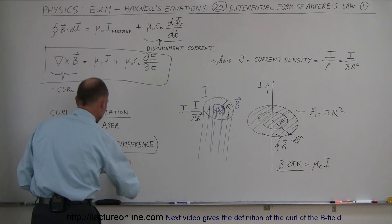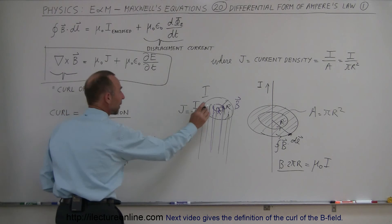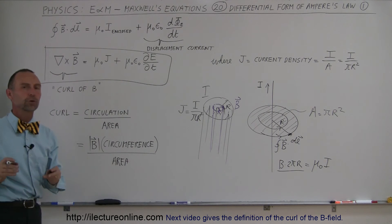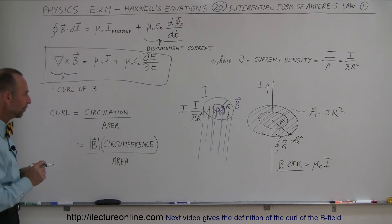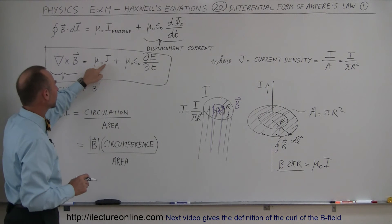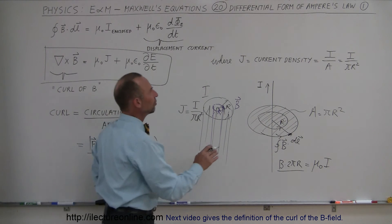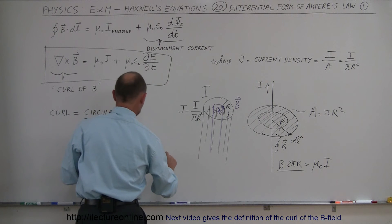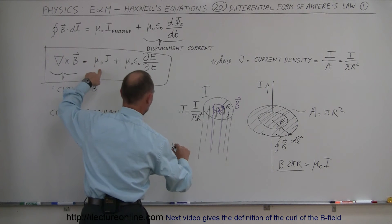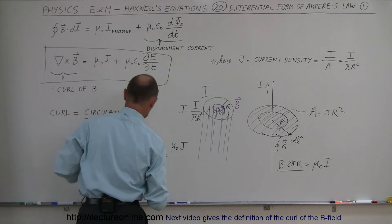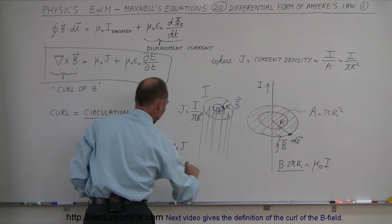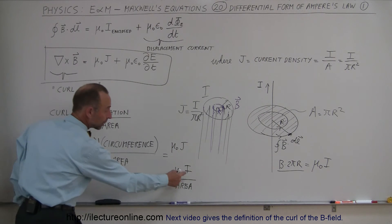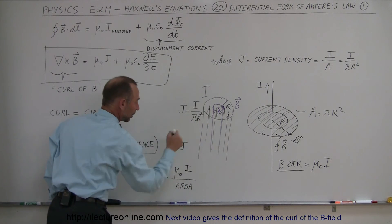If we divide the circulation by the area of the region — in this case πr² — that equals the curl of the B field, or the curl of the magnetic field. So if the curl equals μ₀ times J, and J equals I divided by area, we can see the similarity: μ₀ times I divided by area, where I is the current enclosed in that region.